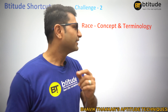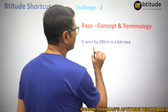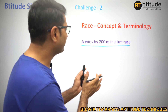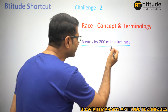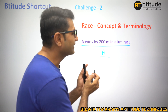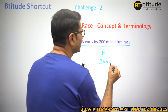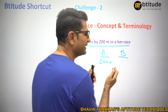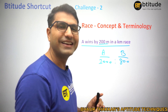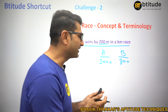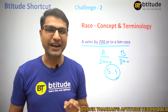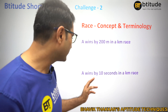Whenever it says 'A wins by 200 meters in a kilometer race,' what exactly does that mean? If the other runner is B, this means A is running the whole kilometer — the full 1000 meters — because he is winning. But B, in that same time, is running 200 meters less, that is 800 meters. So the ratio of their speeds is 5:4.